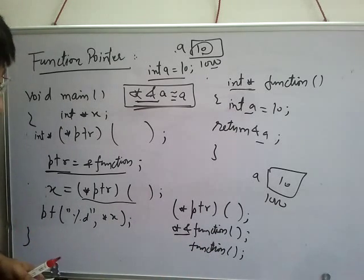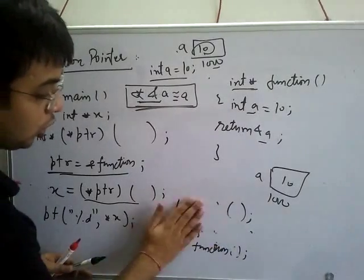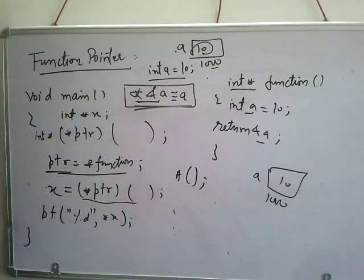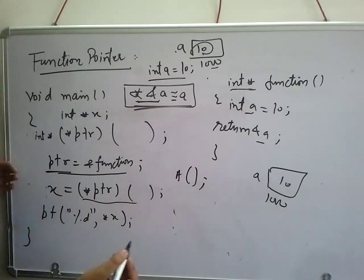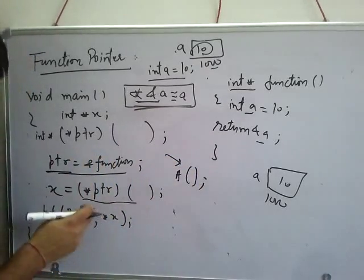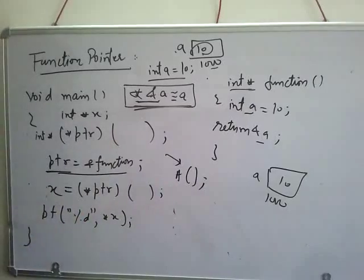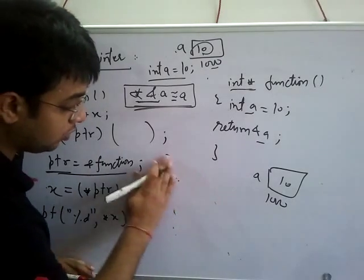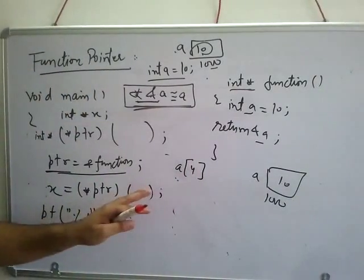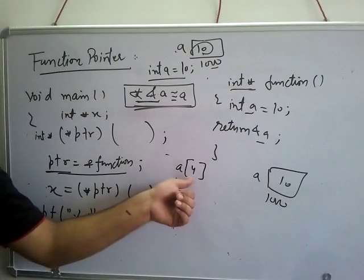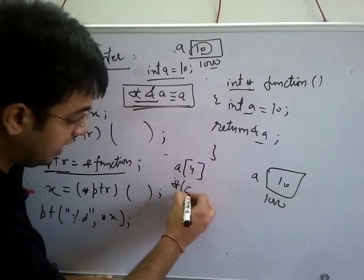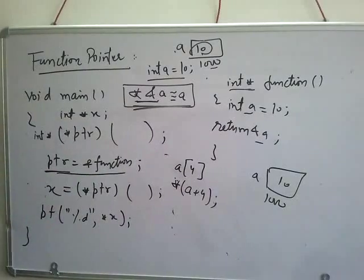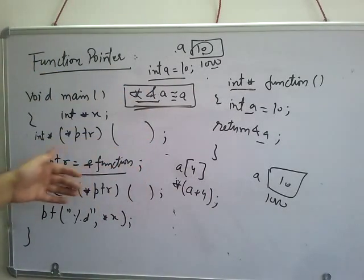Star x is the value at that address. So this statement is the same as this statement. You can do it this way. Just like Dennis Ritchie did to make it convenient for users - accessing arrays as a[4], but inside memory it's happening as star(a+4). We've already seen this in previous videos, no need to discuss it again. So this is how a function is called using a pointer.